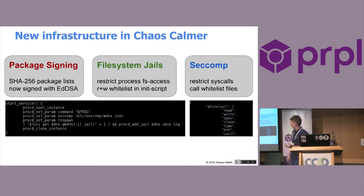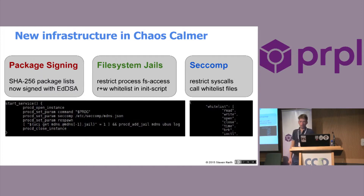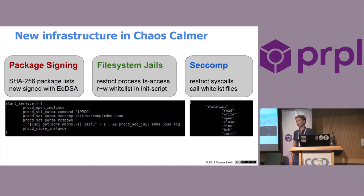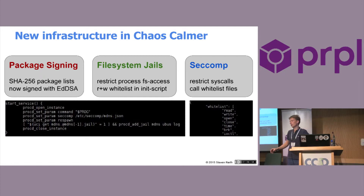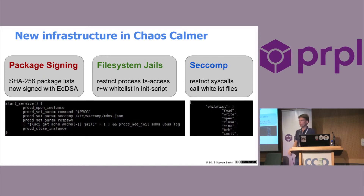You see an example here: in a usual procd-enabled init script, you can define procd_set_jail and add a list of services. You can find it, for example, in the dnsmasq init script, where you can see how to add files to this jail. If you enable this jailing feature, the process cannot access anything outside of the jail. This is done by some combination of bind mounts and moving the actual process using pivot_root into a tmpfs filesystem.